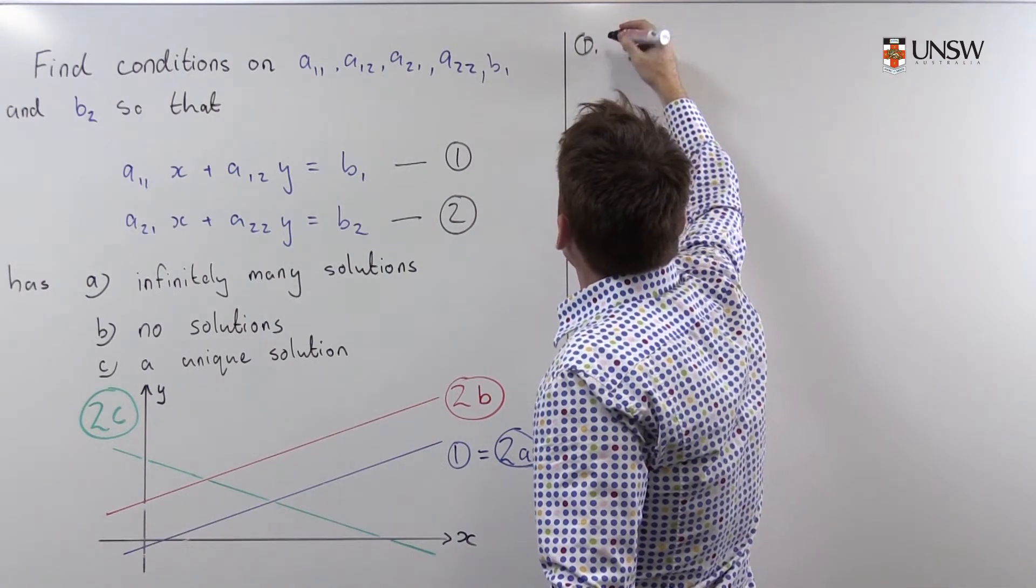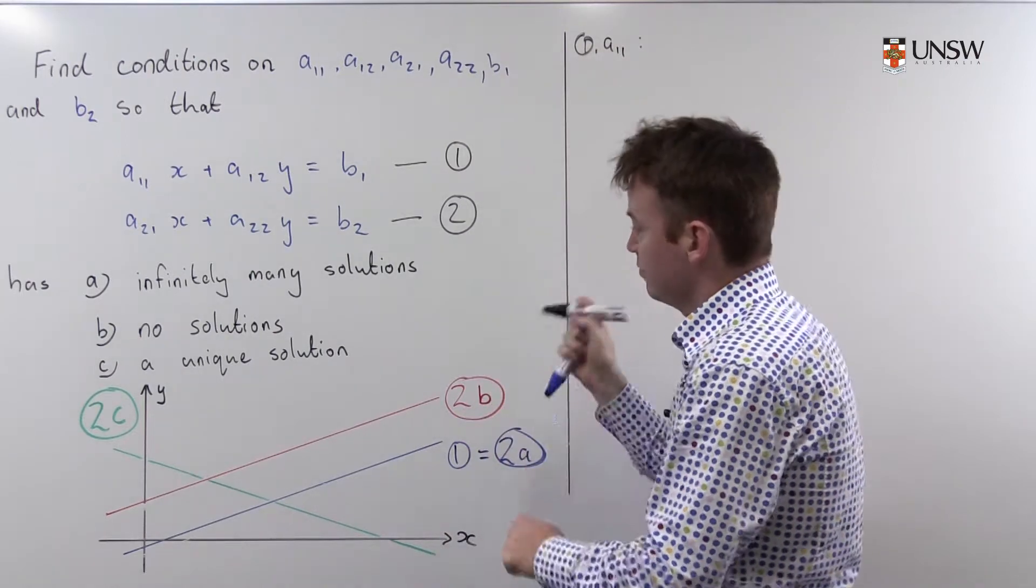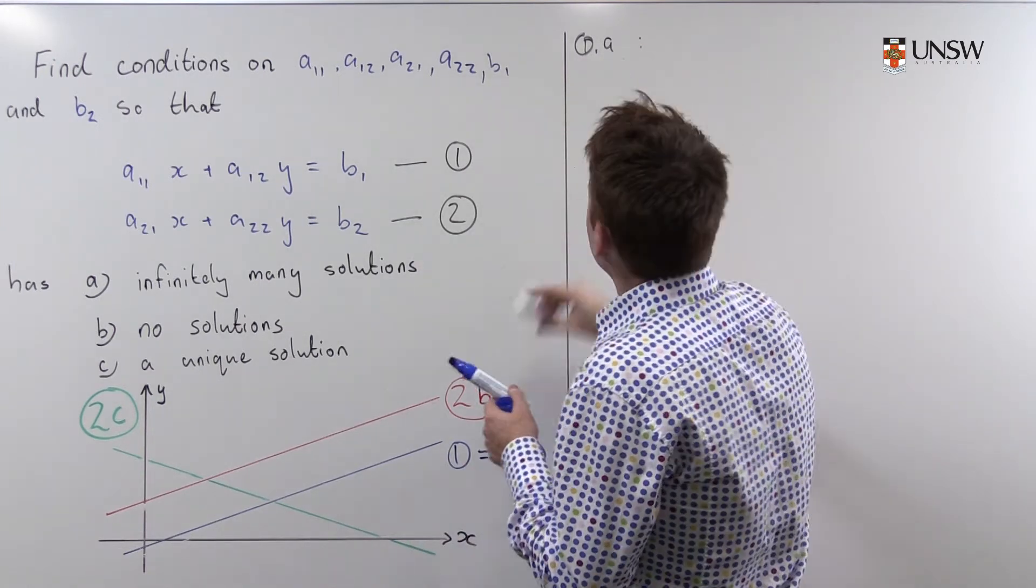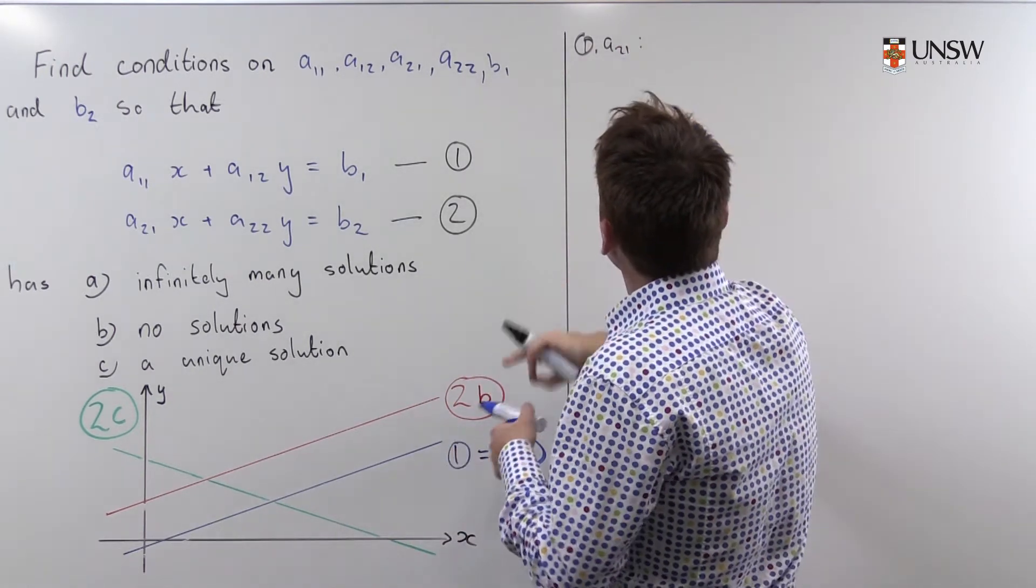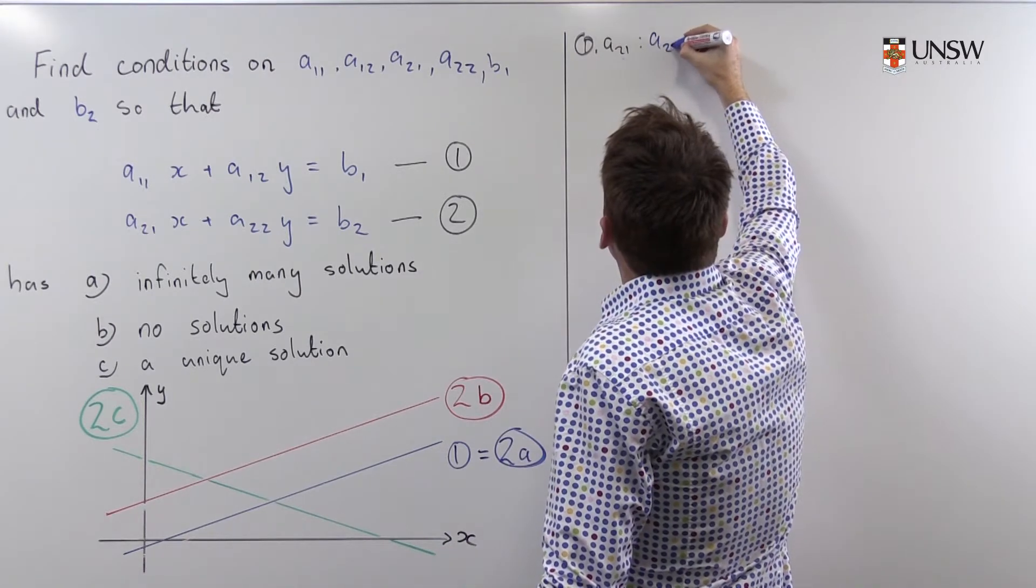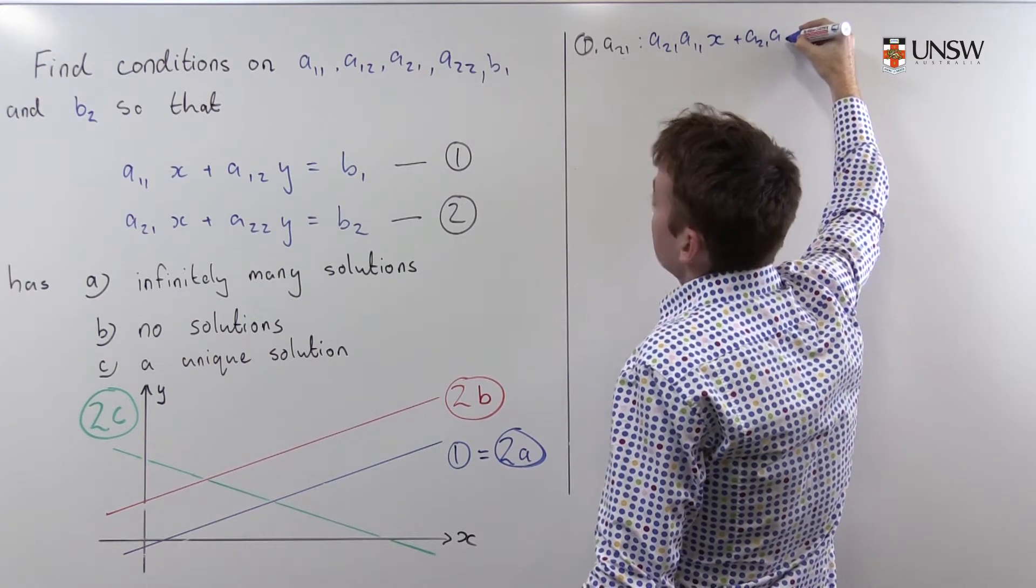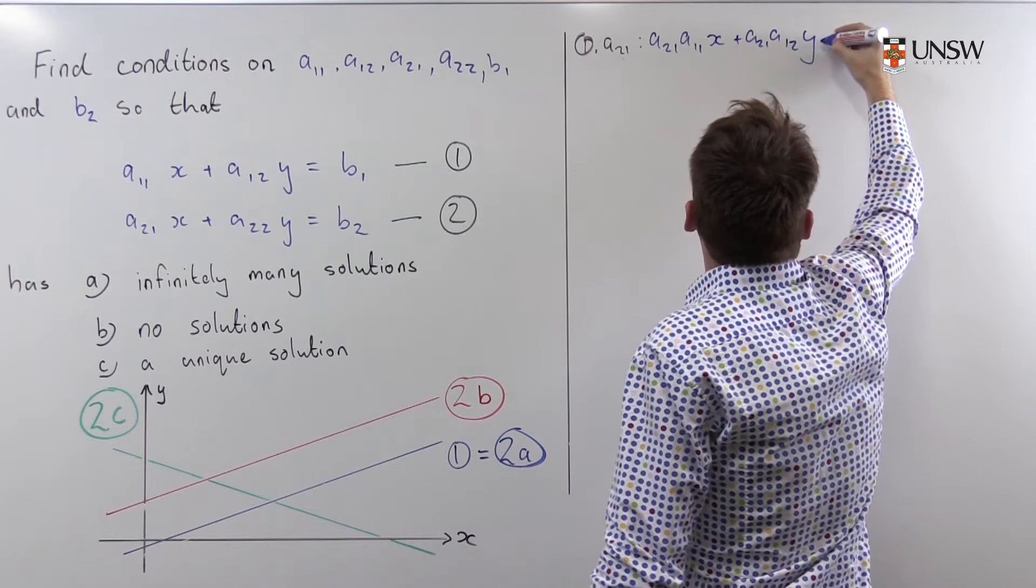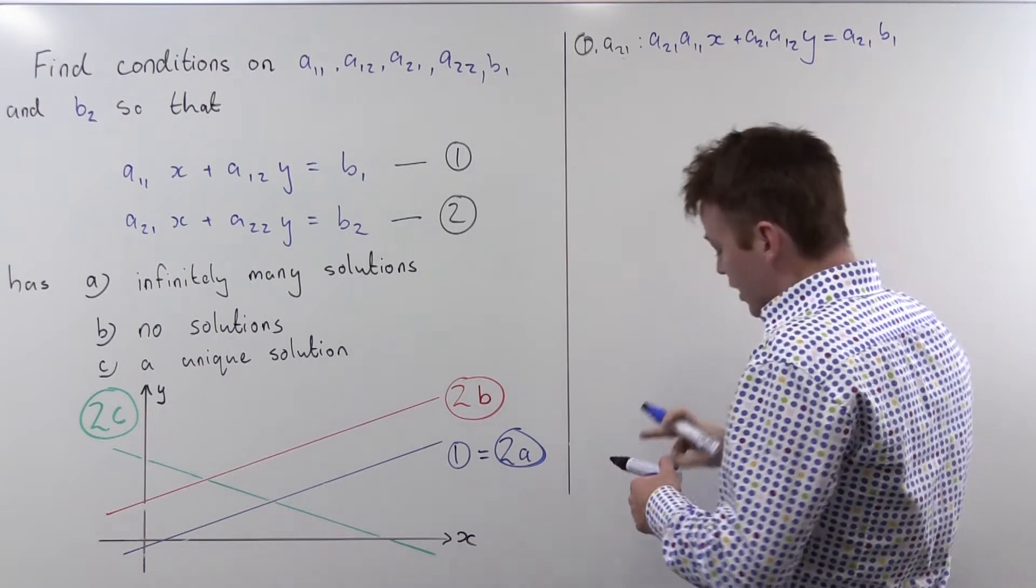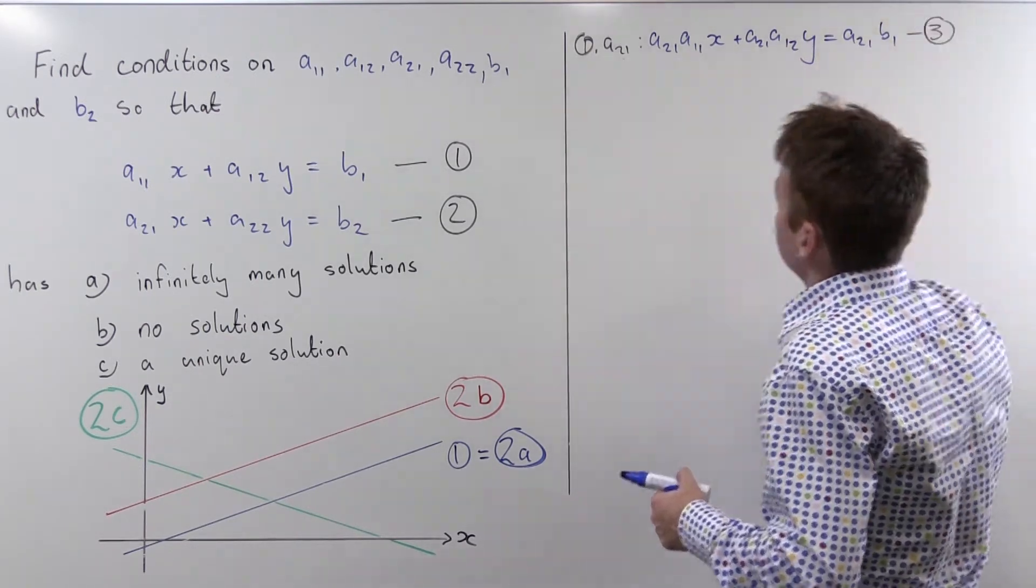So this gives me a₂₁a₁₁x plus a₂₁a₁₂y equals a₂₁b₁, and I'll call this equation three. Let's put that aside for later.